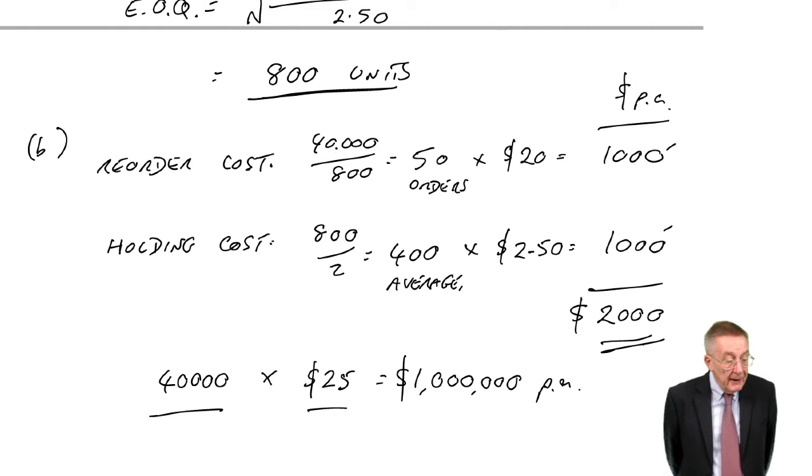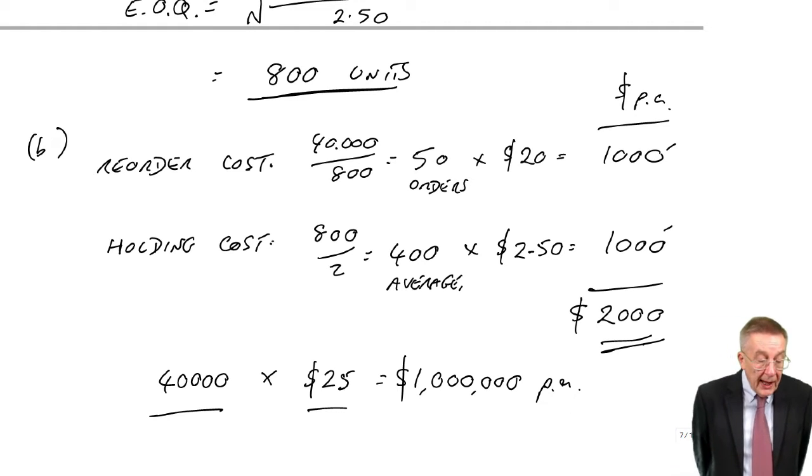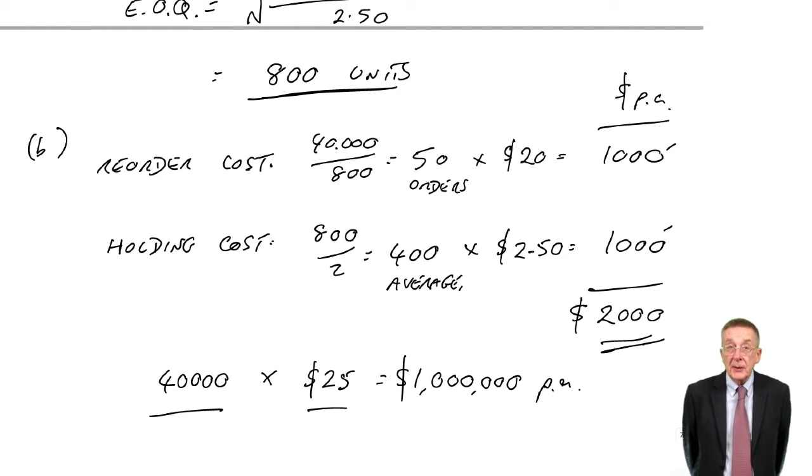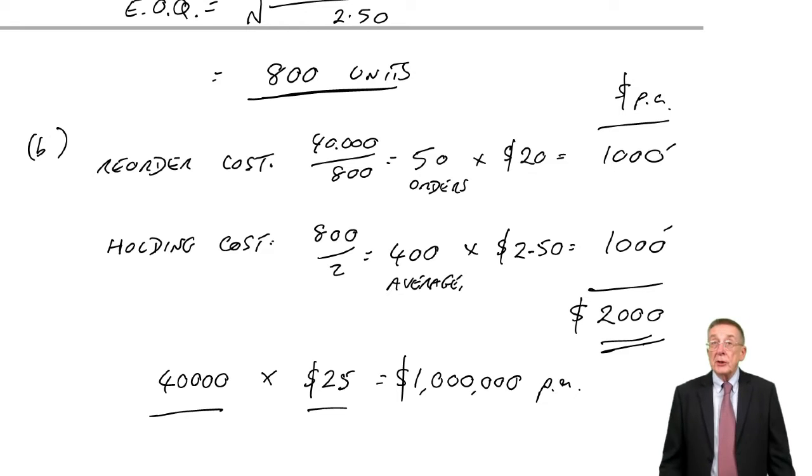Just have a look at what we're told, and then let's see the relevance of it. It says, for the information given in example 1, so that one we did in the last lecture, the supplier now offers us discounts on purchase price as follows. Well, it depends on the order quantity. So if we order between 0 and 5,000 each time, we get no discount at all.